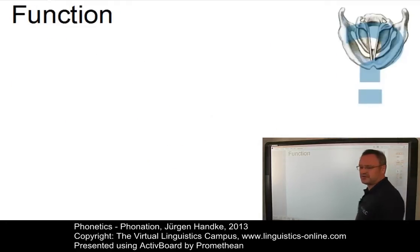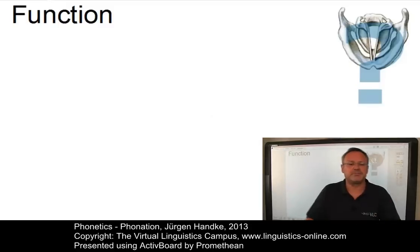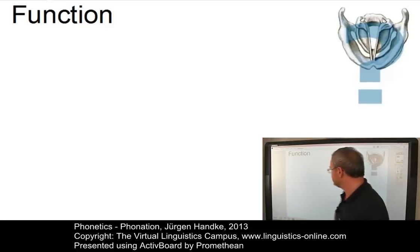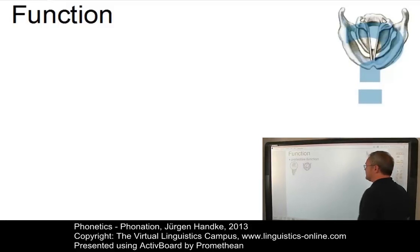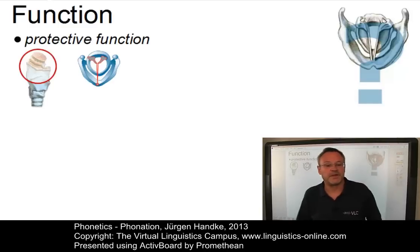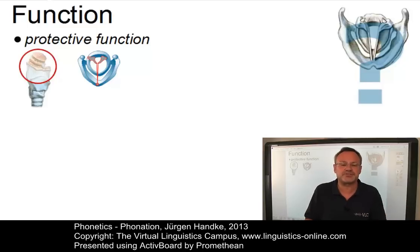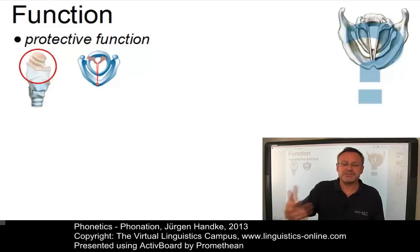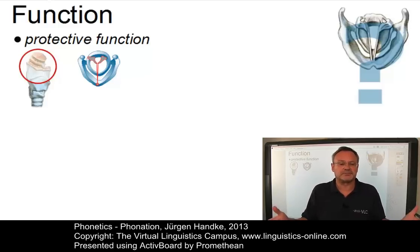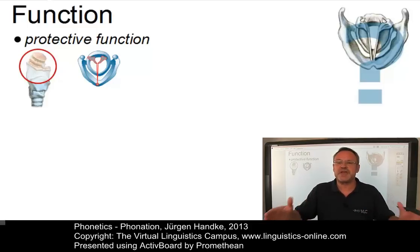The larynx has several functions. The primary biological function of the larynx is a protective function, where the larynx acts as a valve by closing off air from the lungs or preventing foreign substances from entering the trachea. The principal example of this protective function is the glottal closure, during which the laryngeal muscles close the airway while swallowing.